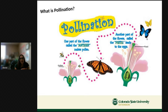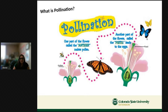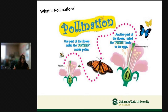The pollen sticks to the pollinator, and then they fly to another flower. They transfer that pollen to a part of the flower called the pistil, which leads down to the eggs. The pollen fertilizes the eggs and a new flower forms. That's how plants reproduce. The flowers help the pollinators by giving them nectar — and some pollinators even eat the pollen.